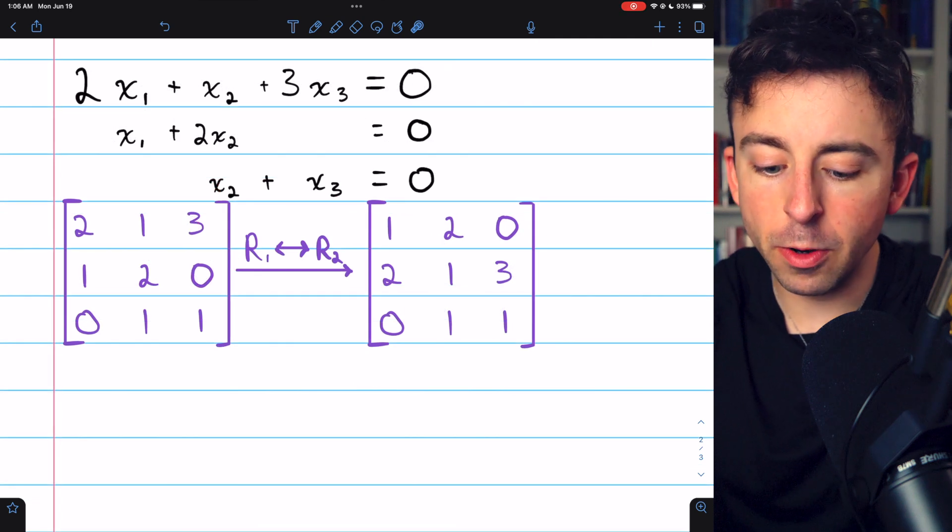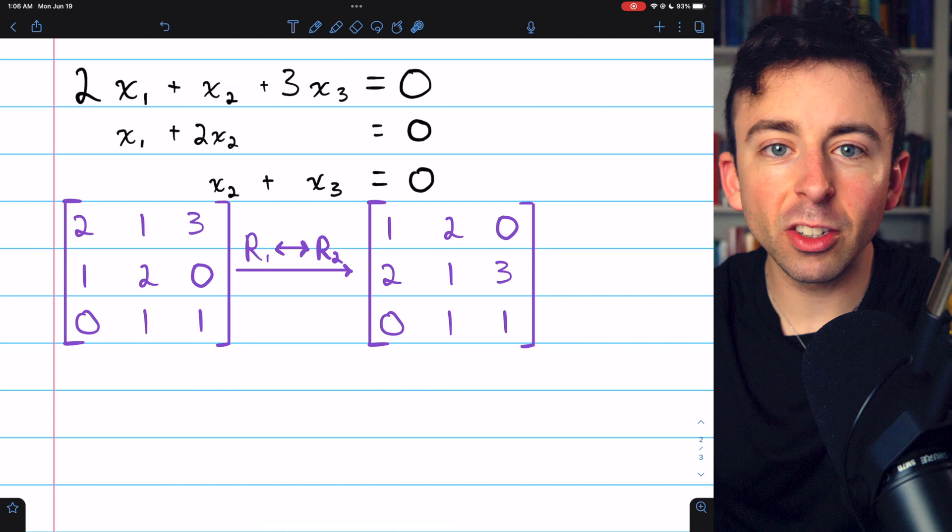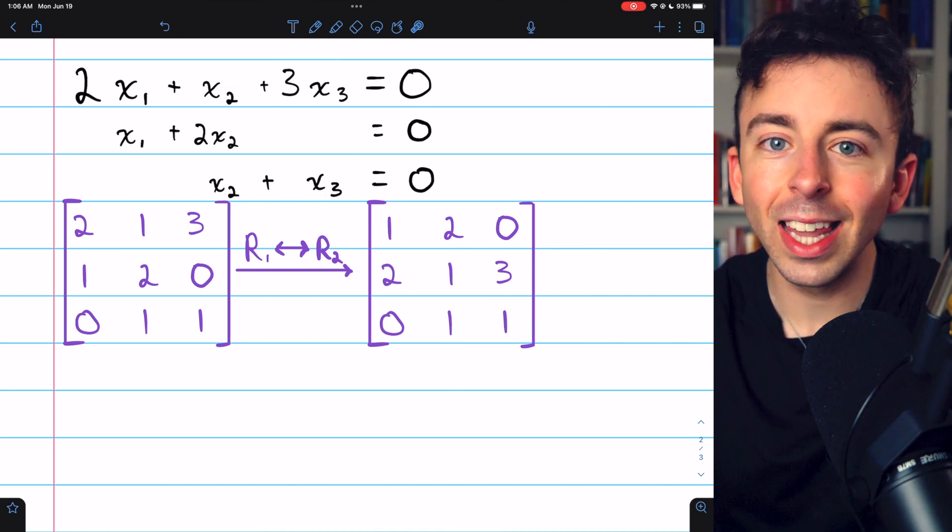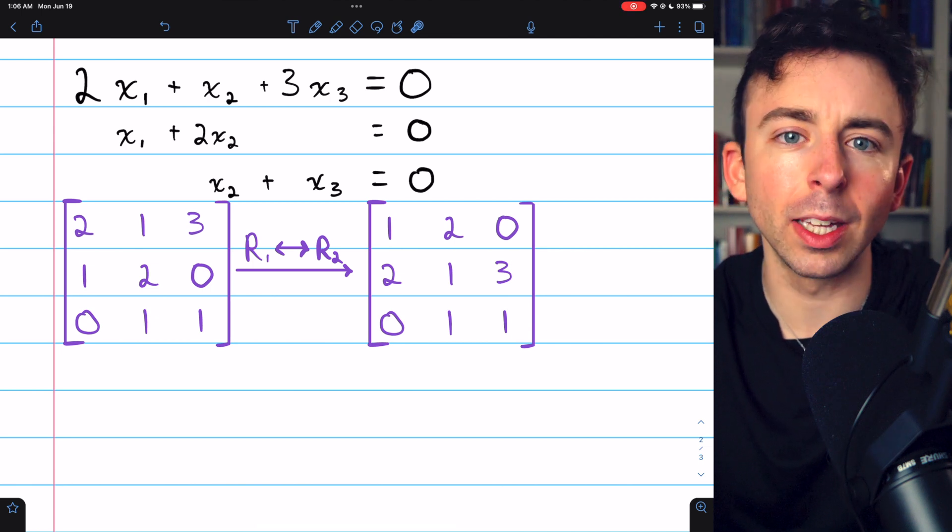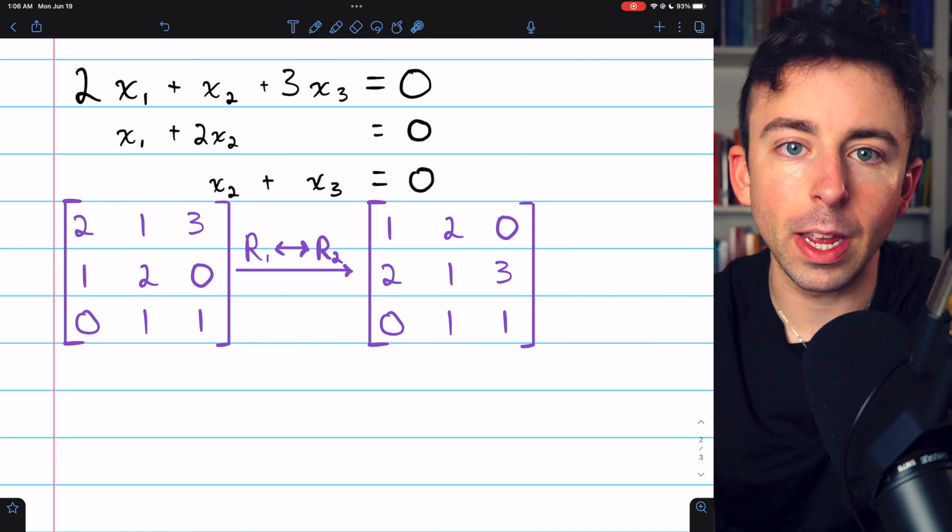Let's do one more example. Here is another homogeneous system of linear equations. Let's go through the process of solving it. And we'll basically use Gaussian elimination to do this. Link in the description to my lessons on Gaussian elimination and Gauss-Jordan elimination, if you need a recap.